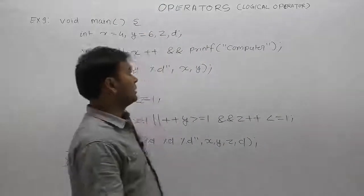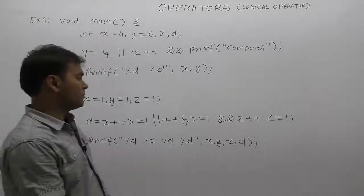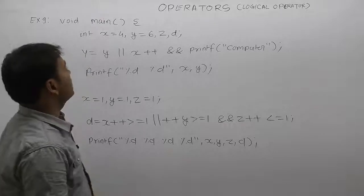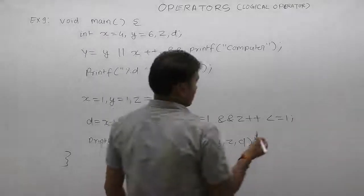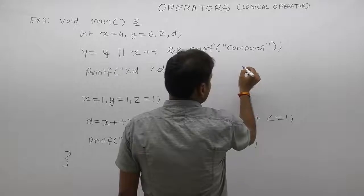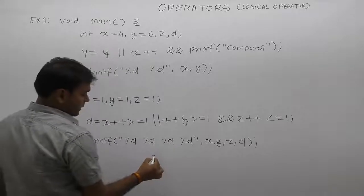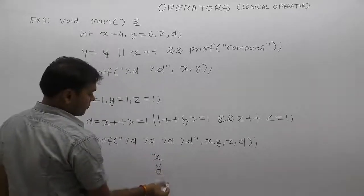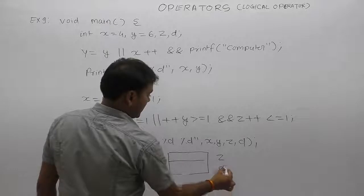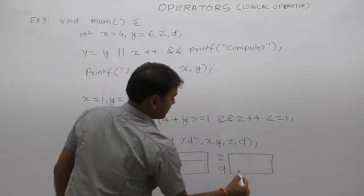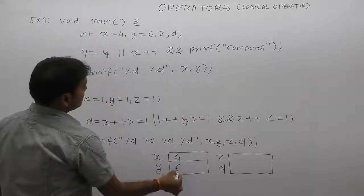Next example regarding logical operators and other combinations of different types of relational and increment/decrement operations. First of all we are declaring four variables: x, y, z, and d. We are performing memory allocation for all four variables. x is initialized by 4 and y is initialized by 6.